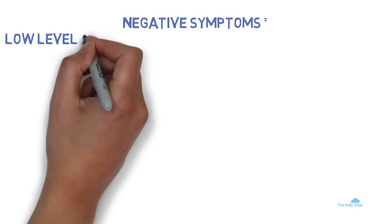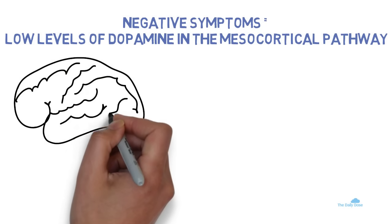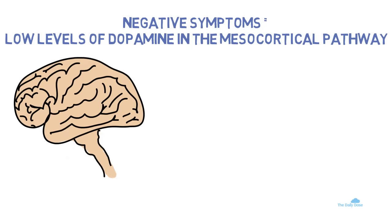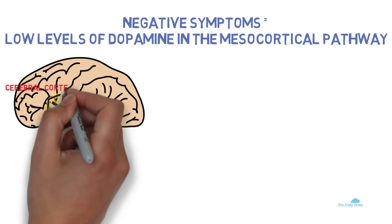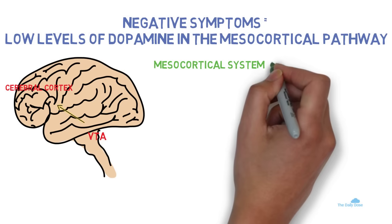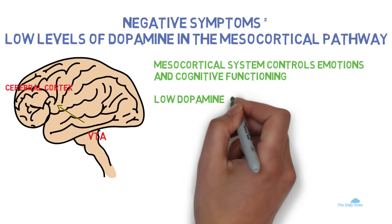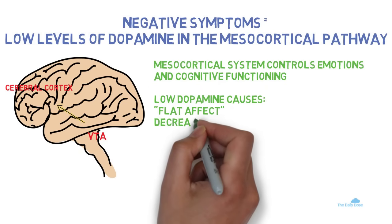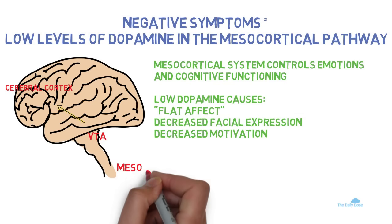What causes negative symptoms? Low dopamine firing in the mesocortical system. The mesocortical system is comprised of neurons that extend from the VTA to the cerebral cortex. But unlike the mesolimbic system, which sees excessive dopamine, low dopamine firing in the mesocortical pathway causes negative symptoms. The mesocortical system is thought to control emotions and cognitive functioning. A depletion of dopamine in this part of the brain is believed to cause flat affect, low levels of facial expression, and decreased motivation levels.